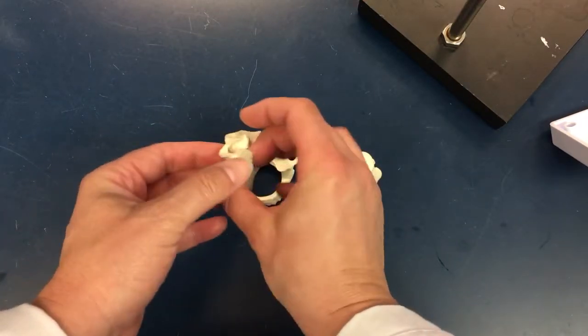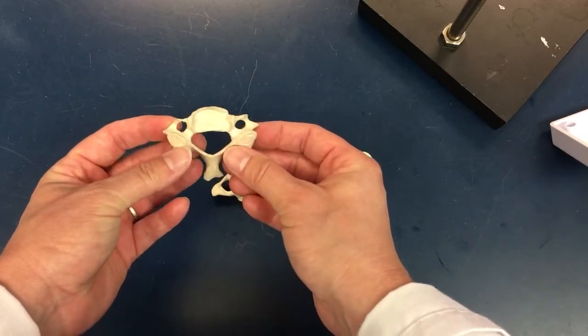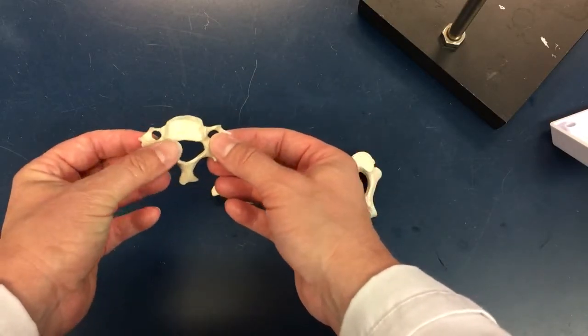Those holes are called transverse foramen, and they're passageways for blood vessels going up to the brain.